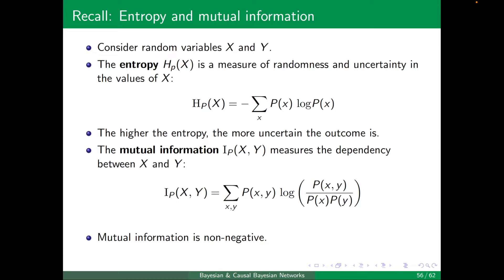Mutual information is non-negative, and a mutual information of 0 implies independence. You can see that then P(x,y) will be P(x) times P(y). So this one will be 1, log of 1 will be 0, and then the whole thing will be 0.